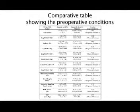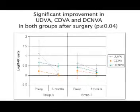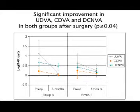The analysis of outcomes revealed a significant improvement in the uncorrected and corrected distance visual acuity, as well as in the distance-corrected near visual acuity in both groups after surgery. As expected, significantly better values of uncorrected and distance-corrected near visual acuity were found in eyes implanted with the M-plus IOL.